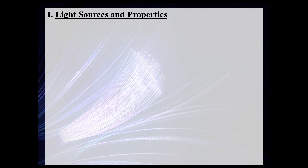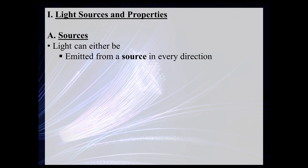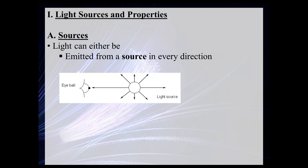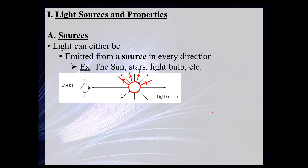To start the unit off we're going to look at different light sources and some basic observable properties of light. There are basically two ways that we can see objects or view light. One is you could simply look directly at a light source. From a light source, light is emitted in every possible direction, shown by drawing lines with arrows called light rays. If one of these light rays hits your eye, you can see the light source. Examples include the Sun, stars, and a light bulb.